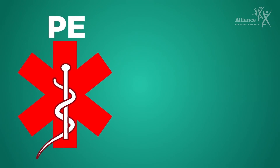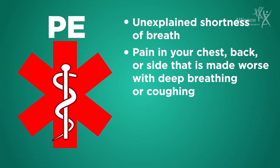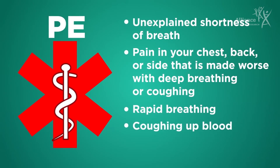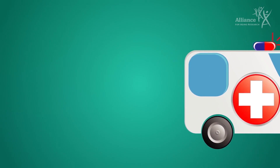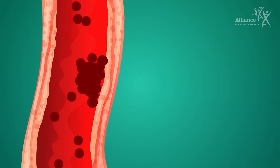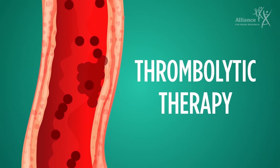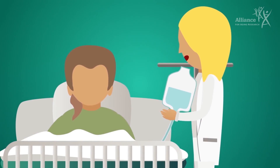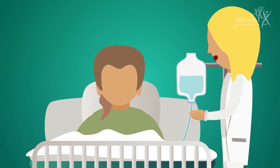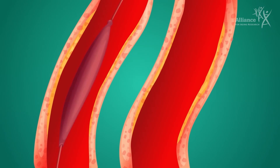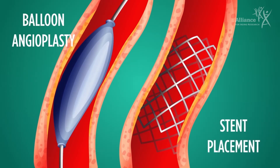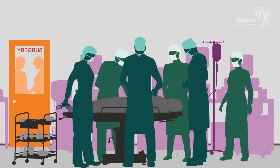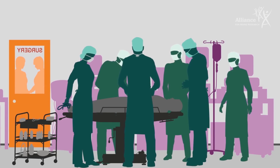Seek immediate medical attention if you experience any of the following: unexplained shortness of breath, pain in your chest, back or side that is made worse with deep breathing or coughing, rapid breathing, coughing up blood, or rapid heartbeat. In some cases, a PE can become immediately life-threatening and your healthcare professional may give you a clot buster medicine, also referred to as thrombolytic therapy, to quickly dissolve blood clots. This medication has a small risk of causing major bleeding, so it is only used in patients with extreme symptoms. In some cases, a procedure is necessary to break up the clot and increase blood flow around it, including balloon angioplasty and stent placement. Surgical removal of the clot or insertion of a filter to catch blood clots coming from the legs may be necessary in rare cases.